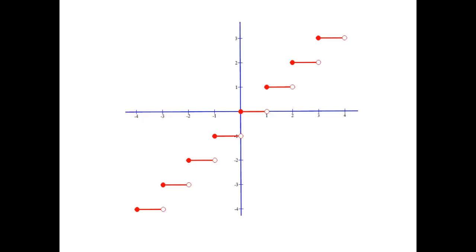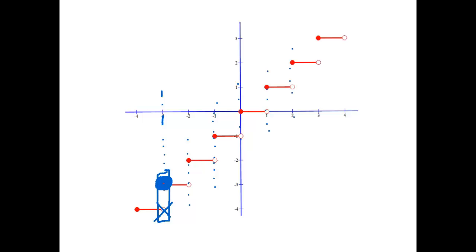Here's our next example — this one is really weird. On these ends those are actually holes, but on these ends those are actually points. If I look at x = -3, you'll notice the point is here, and that other one is an empty hole. So even in this graph, we are only given one y-value for each x-value. So this is a function.